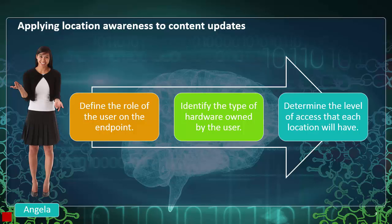When determining the level of access that each location will have, it will vary depending on the location. If the endpoint is in the office, it may be on Ethernet. Or if it is a laptop, it may connect to a corporate network over VPN or be directly in the office. Customize your policies to prioritize from where the endpoint retrieves content, such as creating a GUP to minimize traffic over a WAN to the SEPM.